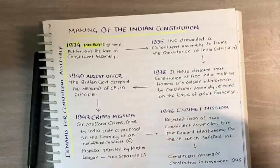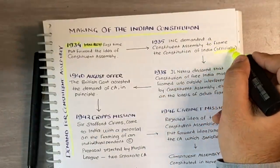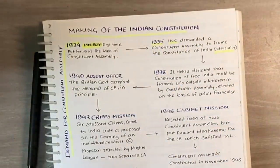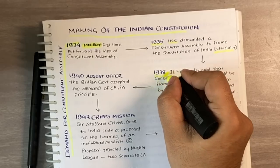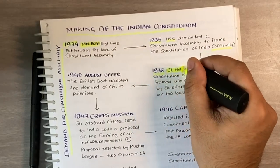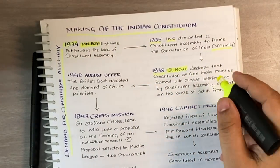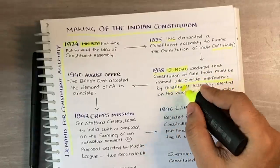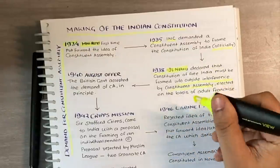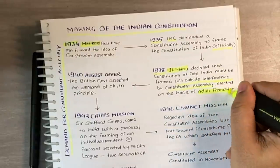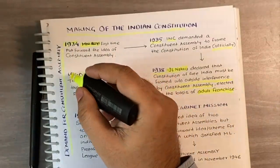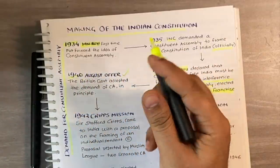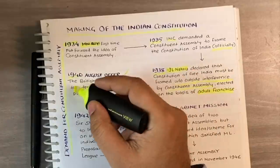The official demand for constituent assembly was put forward by the Indian National Congress in 1935. In 1938, Jawaharlal Nehru declared that the constitution of free India must be framed without outside interference by a constituent assembly, elected on the basis of universal adult franchise. In 1940, in the August Offer, the British government accepted the demand of the constituent assembly in principle.